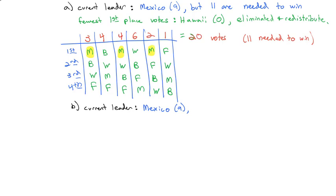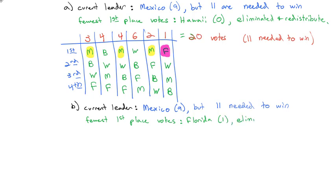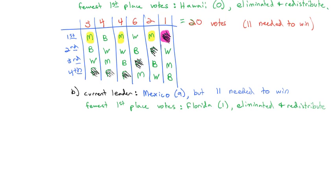We repeat the process by identifying who has the fewest first place votes. This time it's Florida, with only one first place vote, so Florida is eliminated and the votes are redistributed. The last column, which had Florida first and Washington D.C. second, now transfers that vote to Washington D.C.